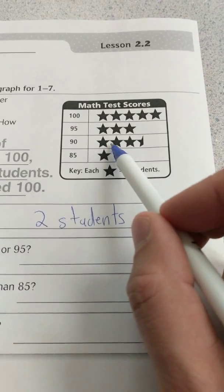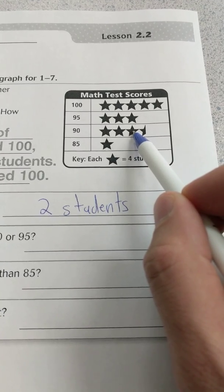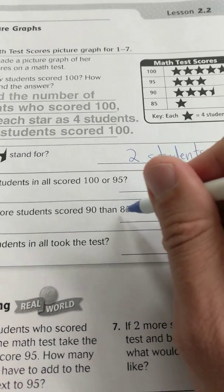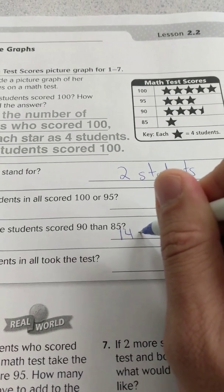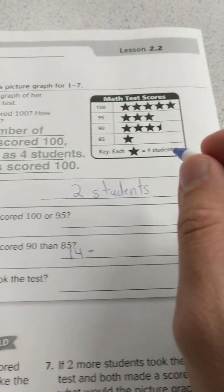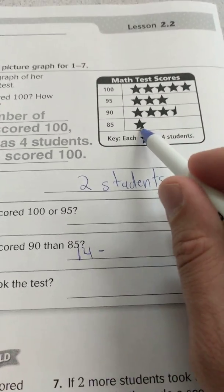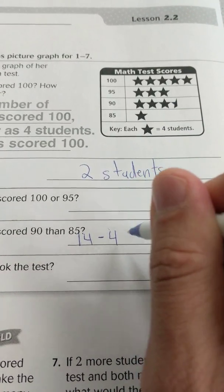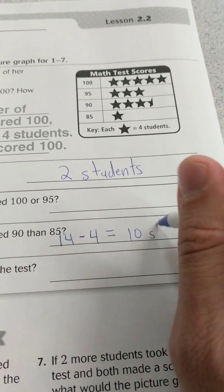We have 4, plus 4 is 8, plus 4 more would be 12, plus 2 more would be 14. So I know 14 students scored a 90, and then how many students scored 85 would just be 4, because there's 1 star, and 1 star equals 4. So 14 minus 4 equals 10 students.